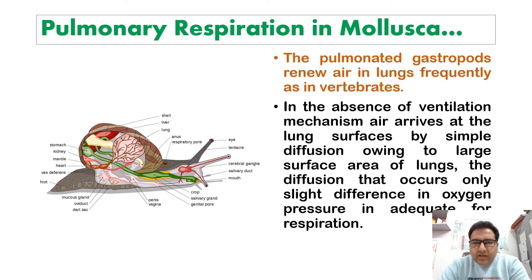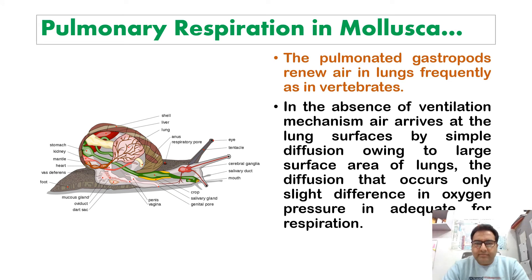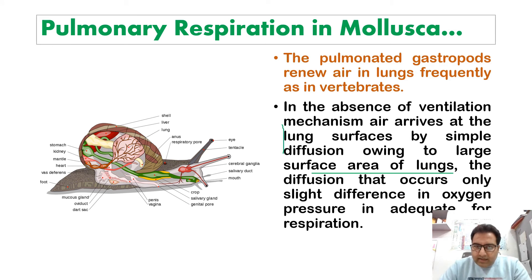Pulmonary gastropods renew air in the lungs frequently, as in the case of vertebrates. In the absence of a ventilation mechanism, air arrives at the lung surface by simple diffusion owing to the large surface area of the lungs. Because of this large surface area, when air enters the lungs, diffusion occurs and only a slight difference in oxygen pressure is adequate for respiration.